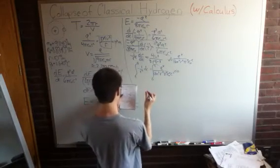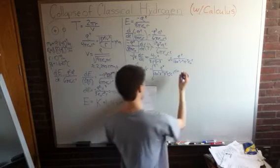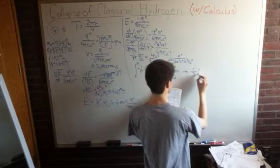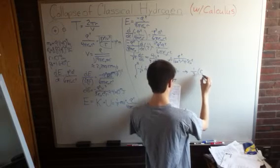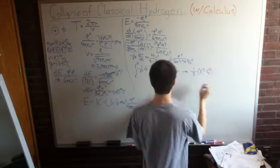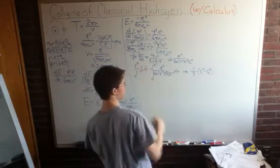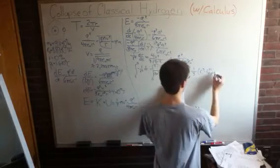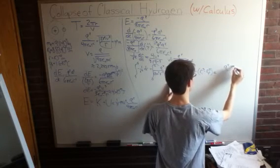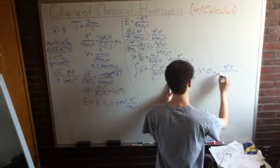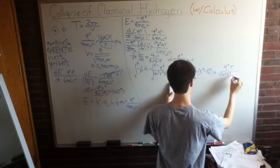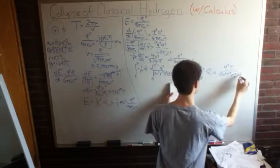you'll find that this gives you 1 3rd times r initial cubed minus r final cubed, because we took the negative sign, which basically just flipped the bounds. And that's equal to q to the 4th times tau divided by 12m squared pi squared epsilon naught squared c cubed.